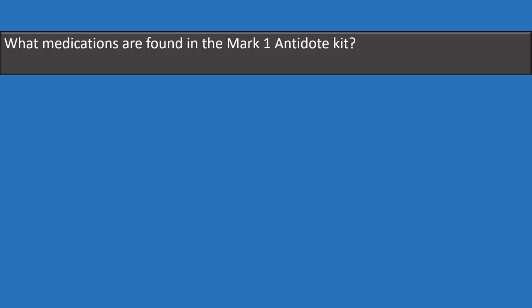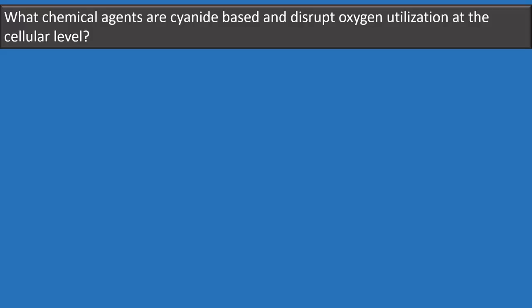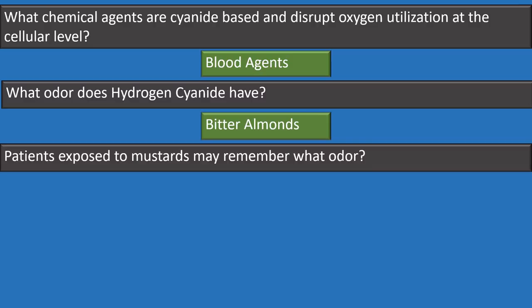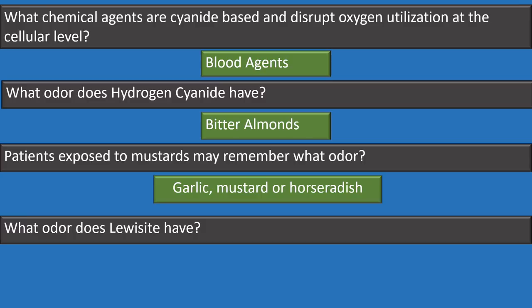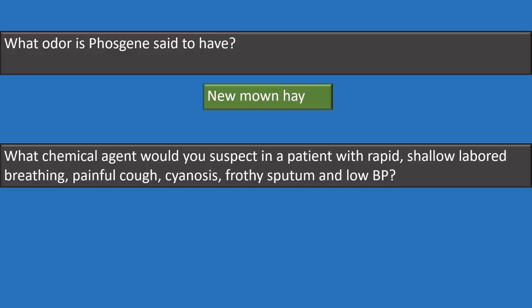The Mark 1 antidote kit contains 2 milligrams of atropine and 600 milligrams of 2-PAM chloride. Chemical agents that are cyanide-based and disrupt oxygen utilization at the cellular level are blood agents. Hydrogen cyanide smells like bitter almonds. Patients exposed to mustards will remember a garlic, mustard, or horseradish odor. Lewisite smells similar to geraniums. Phosgene smells like new-mown hay.